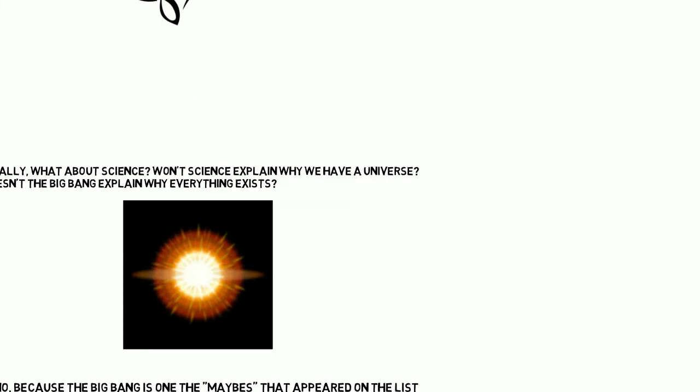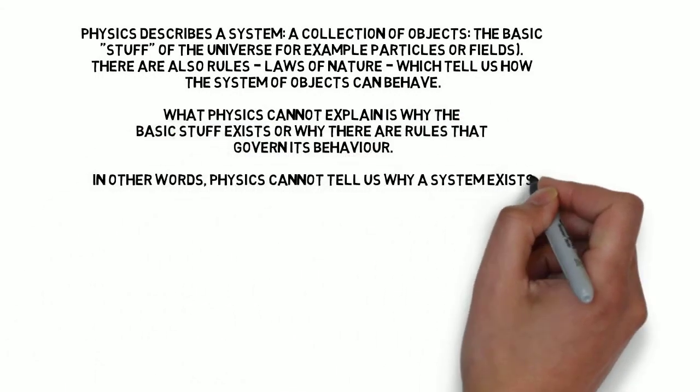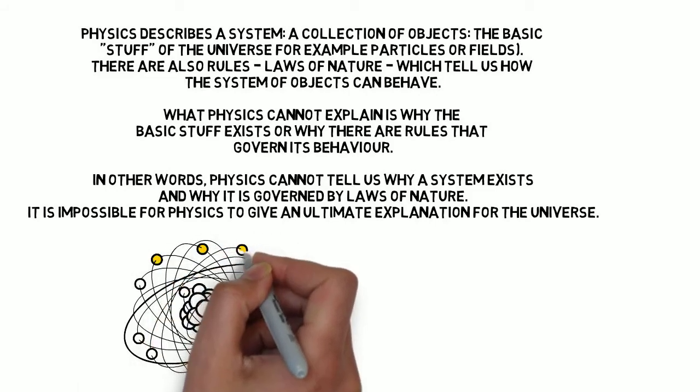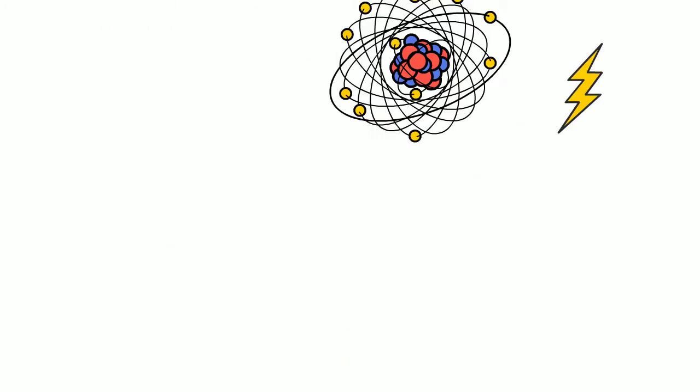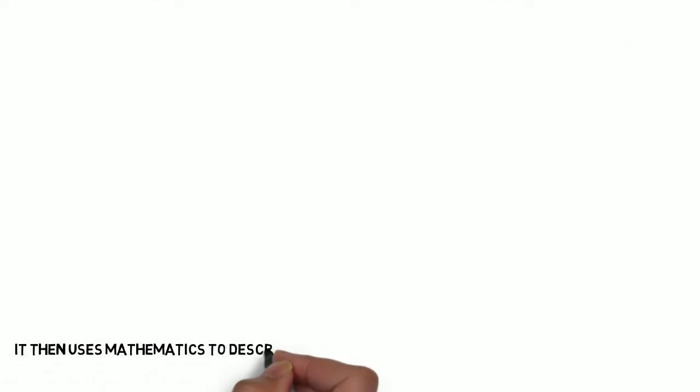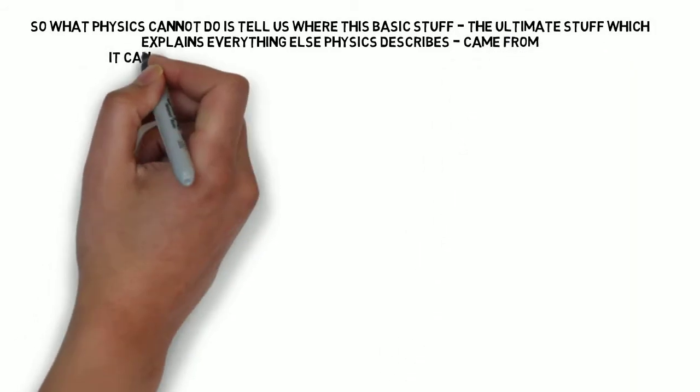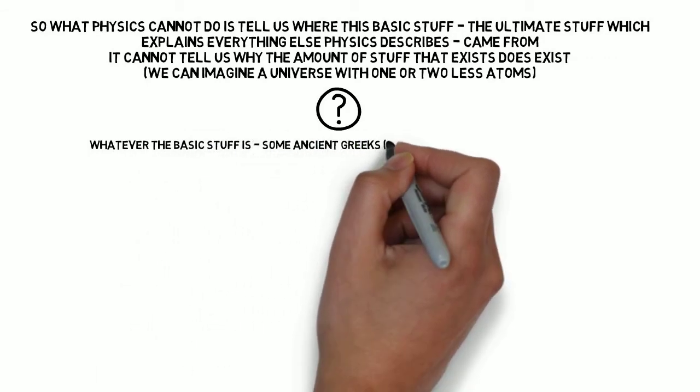See, what physics does is it describes a system. It needs some basic stuff, some object that makes up everything else. It could be particles or energies or fields of force. And that basic stuff makes up everything else in the universe. And then physics looks at the rules, the laws of nature that govern that basic stuff. And it describes how that stuff can evolve from one state into another. And really interestingly, it uses mathematics to describe how this stuff changes from one state into another. Now, what physics cannot do is it can't tell us where that stuff came from. It needs that basic stuff to give you any explanation at all. It can't tell you why the amount of stuff that exists does exist.